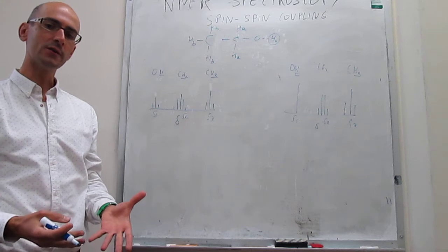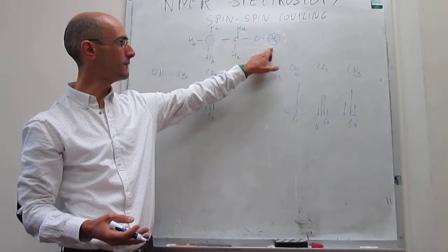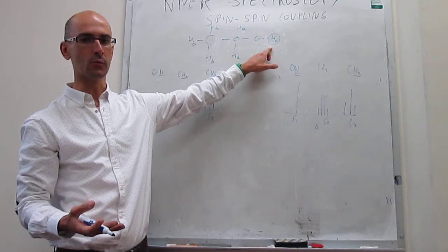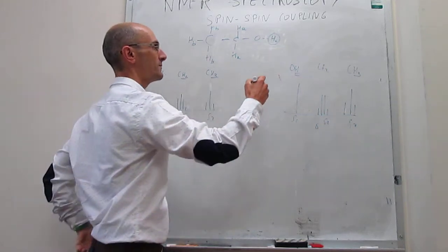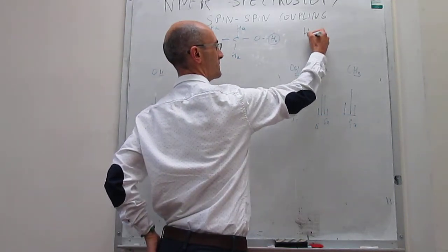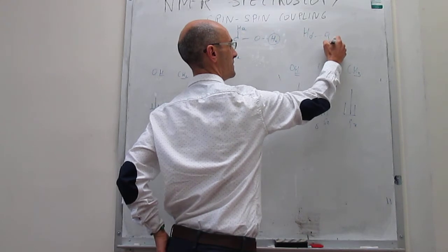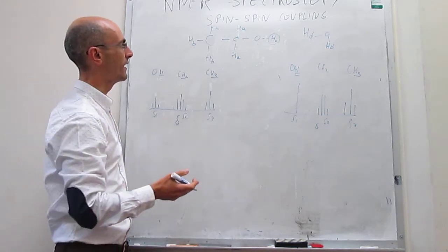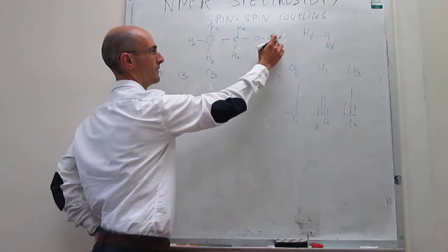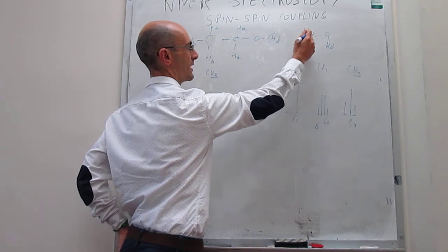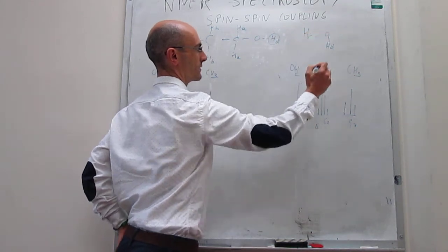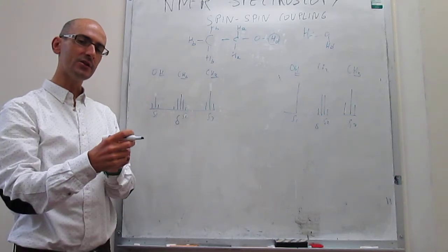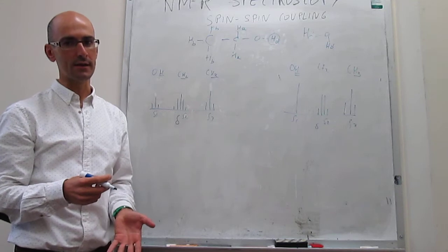What's going on in the solution is that this proton of ethanol can actually exchange with the water through acid-base equilibrium. You can actually have that protons of water, we're going to call them HD, HD-O-HD, can actually exchange pretty fast with the proton of ethanol so that after some time, your molecule might look like this, or your solution might look like this. What happens is that this proton exchange is actually really fast compared to the time scale of NMR.